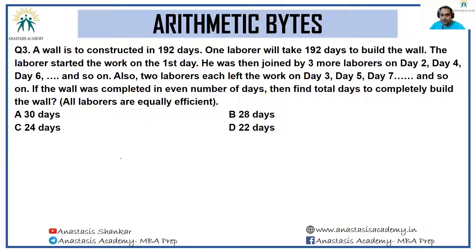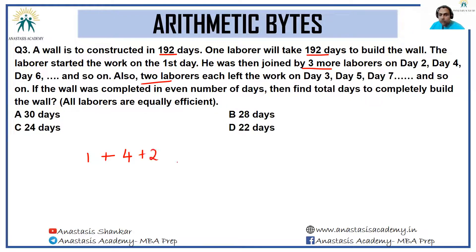If the wall was completed in an even number of days, find the total days to completely build the wall. All laborers are equally efficient. Now, because the wall is to be constructed in 192 days and one laborer will take 192 days, let the efficiency of every laborer be 1. So on day one, 1 unit of work is done. On day two, three more laborers join, so 4 units of work is done. On day three, two laborers leave, so 2 laborers will work. Then three more join, two leave, three join, two leave, and this continues.